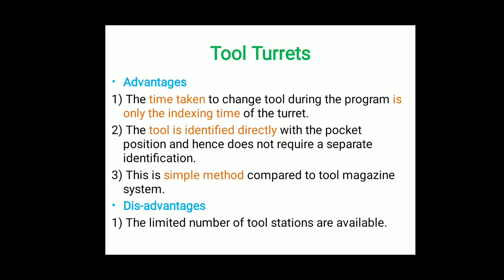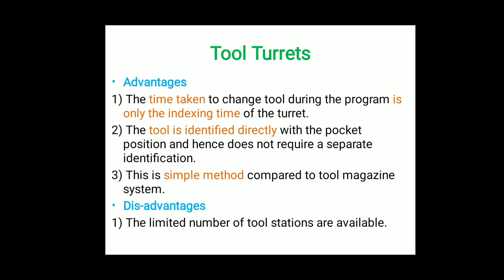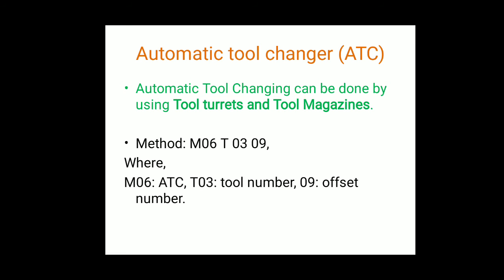The disadvantage of the tool turret is that only a limited number of tool stations are available — about 10 to 12 tools. This is the major disadvantage. Overall, compared to the tool magazine, the tool turret is a better option for changing tools as it saves time and increases productivity.